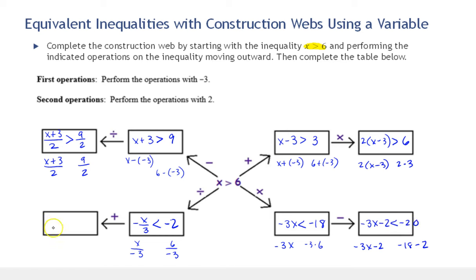Finally, we are going to add 2 to both sides. So we have negative x over 3 plus 2 is less than negative 2 plus 2, which is 0. We have completed the web. All of these inequalities are equivalent inequalities, just like we built equivalent equations before. If we were to solve any of them, the final solution would be x strictly greater than 6.